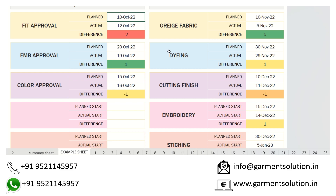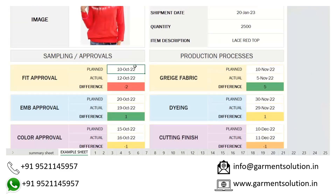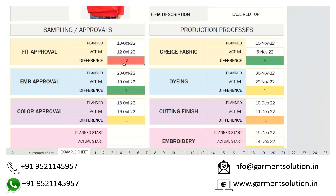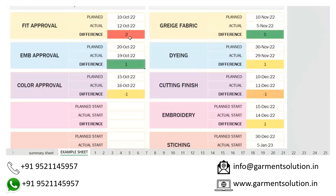Then enter the planned date and the actual date of the process being finished. The difference will show automatically and will be segregated by colors. For example, red will show the maximum delayed part of the shell and green will show which are done with the minimum difference.